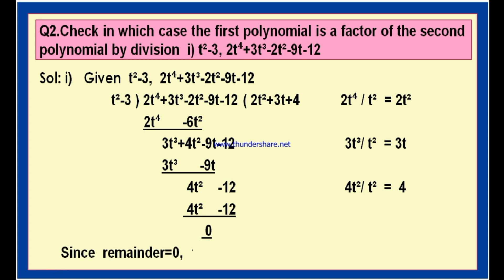Since the remainder is equal to 0, T square minus 3 is a factor of 2T power 4 plus 3T cube minus 2T square minus 9T minus 12. Thank you.